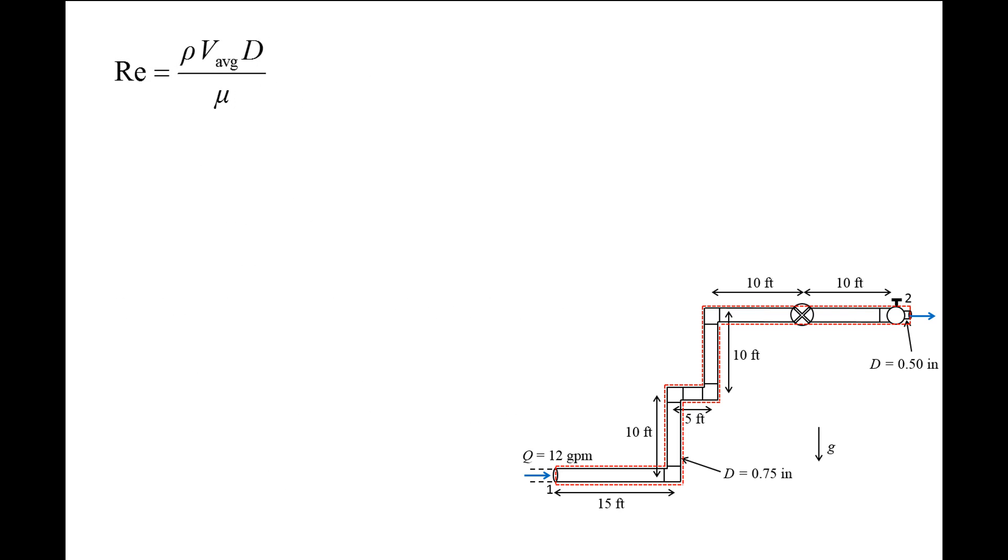Before we calculate the friction factor, we need to know the Reynolds number to determine the flow regime. The equation for the Reynolds number for pipe flow is the density rho times the average flow speed times pipe diameter over absolute viscosity mu. At 60 degrees Fahrenheit, the density of water is approximately 1.94 slugs per cubic foot, and the absolute viscosity is approximately 2.34 × 10^-5 pound force seconds per foot squared. The average flow speed in the pipe is 8.715 feet per second, and the pipe diameter is 3/4 inch or 0.0625 feet. This gives a Reynolds number of 45,160.